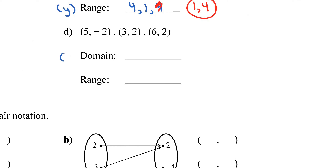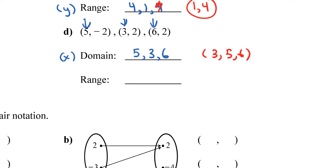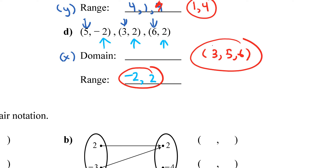For letter D, domain X values are 5, 3, and 6. Rearranged least to greatest: 3, 5, 6. Range Y values are negative 2, 2, and 2 — remove the repeat and the range is negative 2 comma 2.